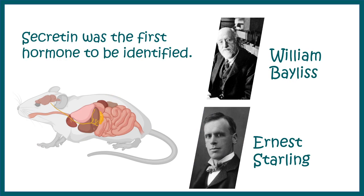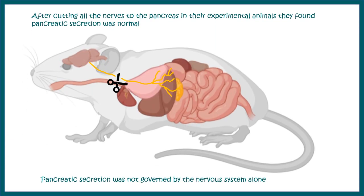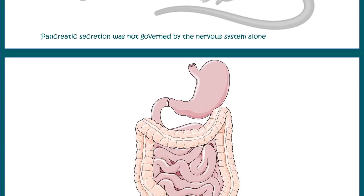Secretin was one of the first hormones discovered by Bayliss and Starling through an elegant experiment in the mouse gastrointestinal system. They knew that nervous stimulation regulated gastric secretion, so they severed the gastric nerve, expecting pancreatic secretion to be disrupted. Instead, secretion and digestion remained normal, indicating a soluble controlling agent — which was later identified as secretin.